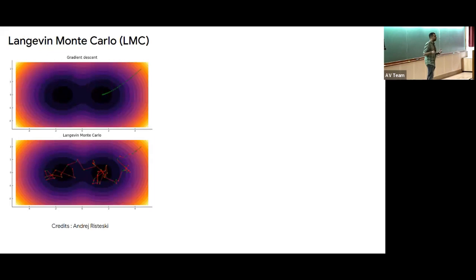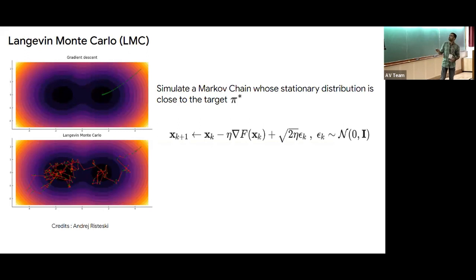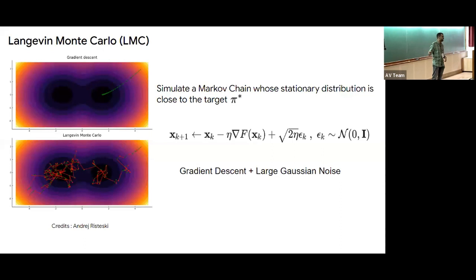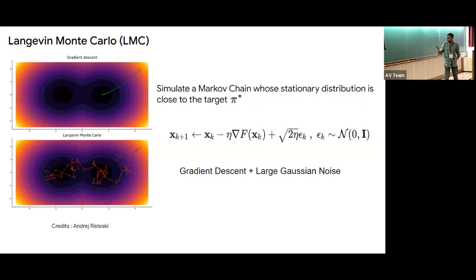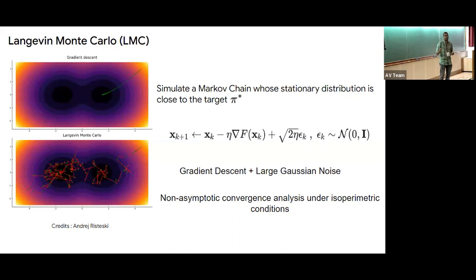The prototypical algorithm used in sampling of this sort is called Langevin Monte Carlo—a Markov chain whose stationary distribution is close to the target π*. It is basically gradient descent along the potential function f plus a large Gaussian noise of order square root η. This should be seen as a discretization of a stochastic differential equation rather than the approximation of a flow. There is a lot of nice non-asymptotic convergence analysis under isoperimetric conditions.